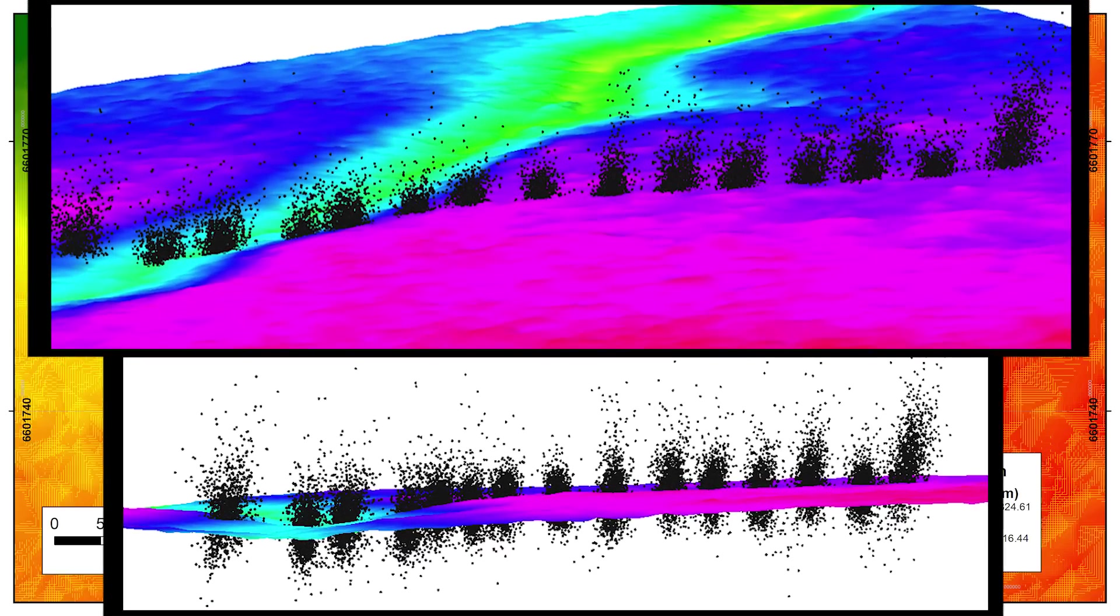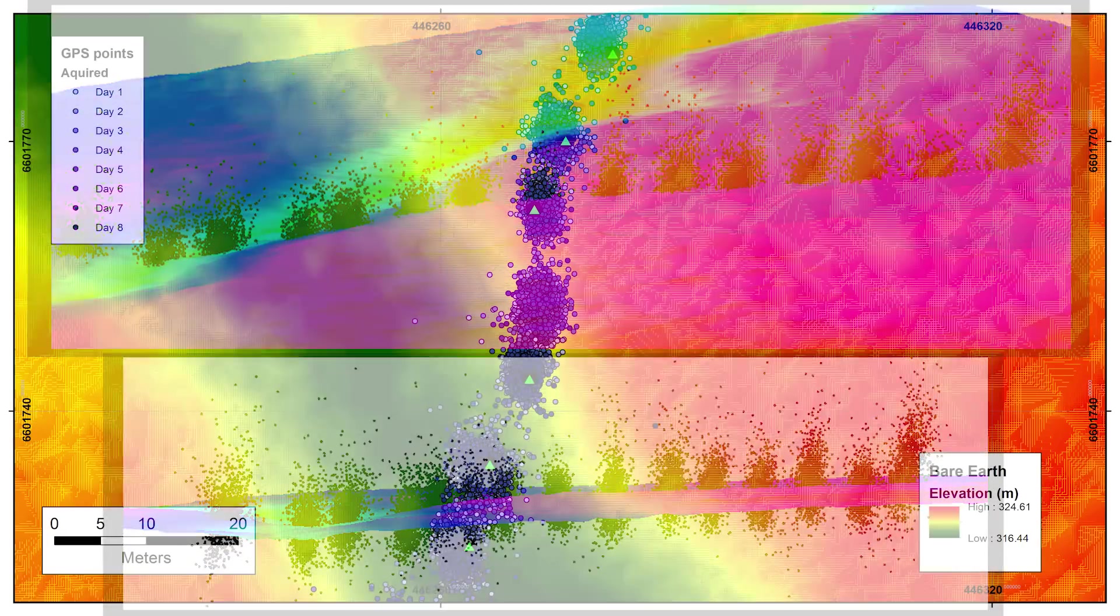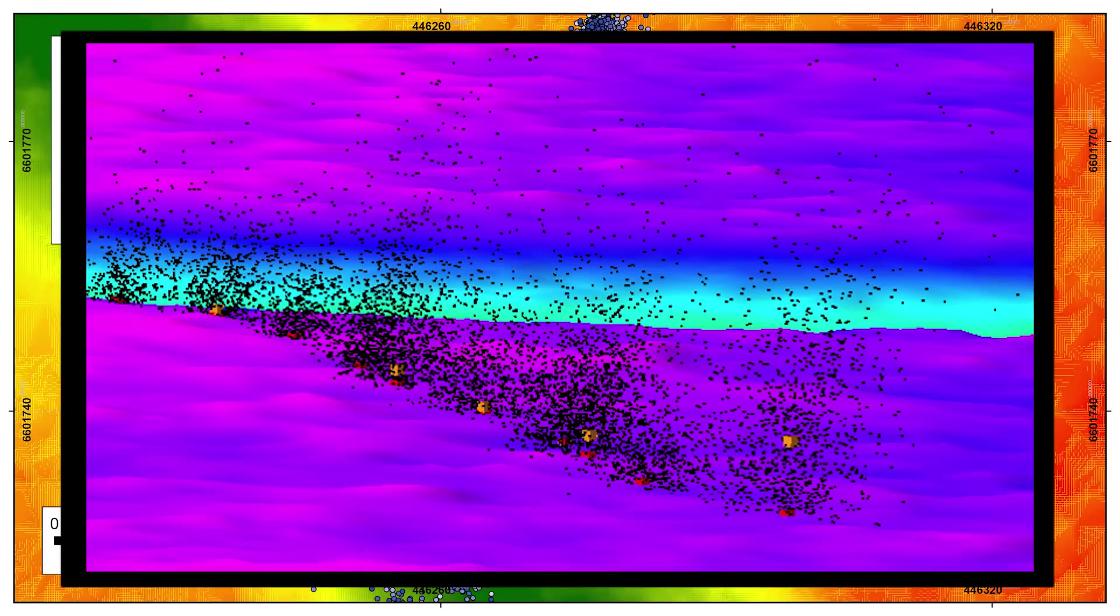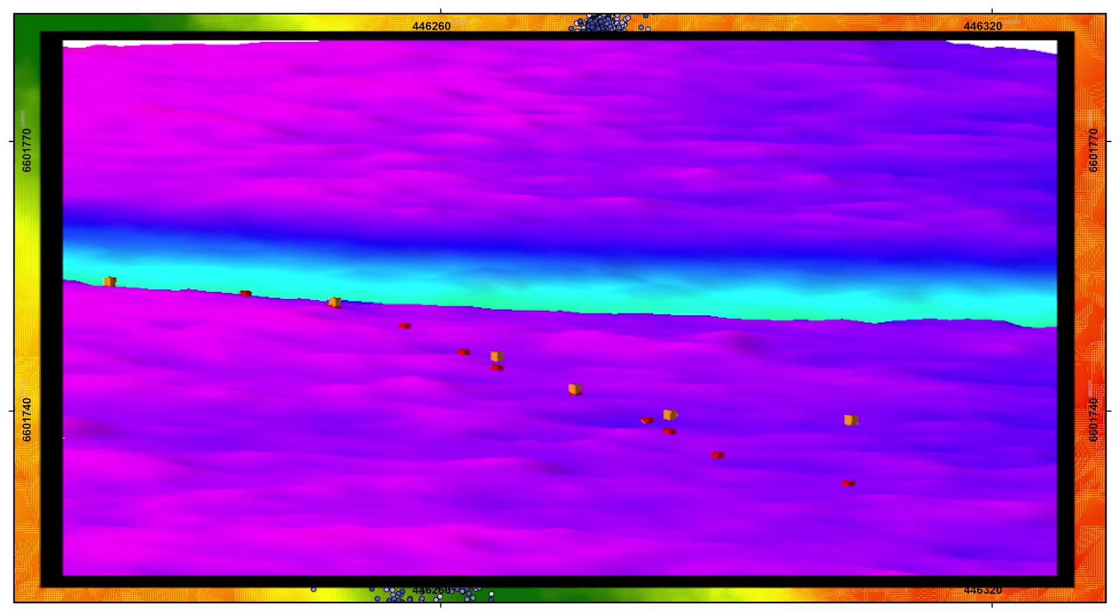This diagram shows the bare-earth LIDAR surface with the point cloud data from the nodes, and the computed final position of each node shown as an amber cube. We then take that computed position and correct the vertical so that the vertical ties the LIDAR surface.